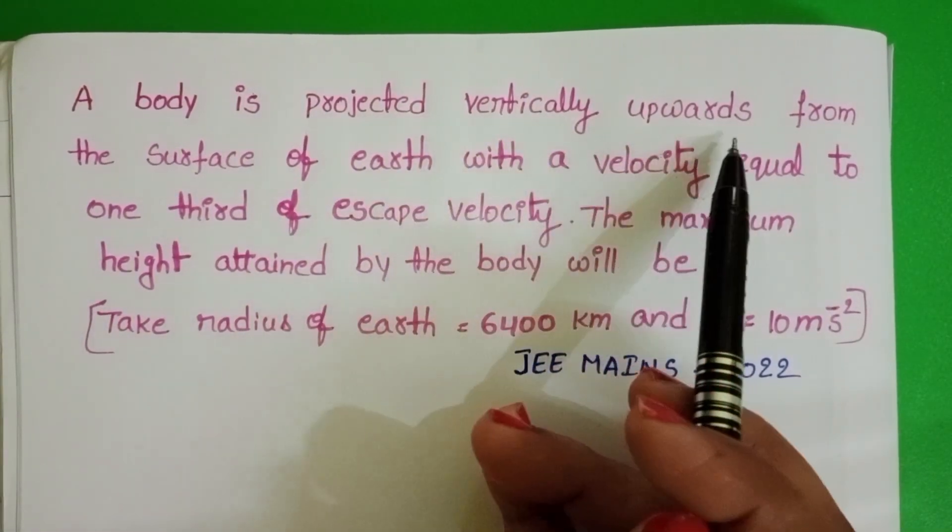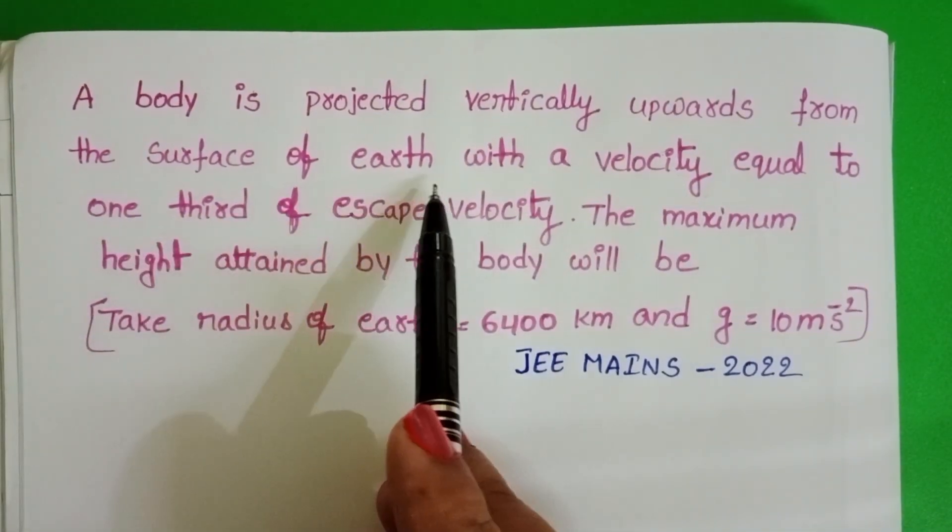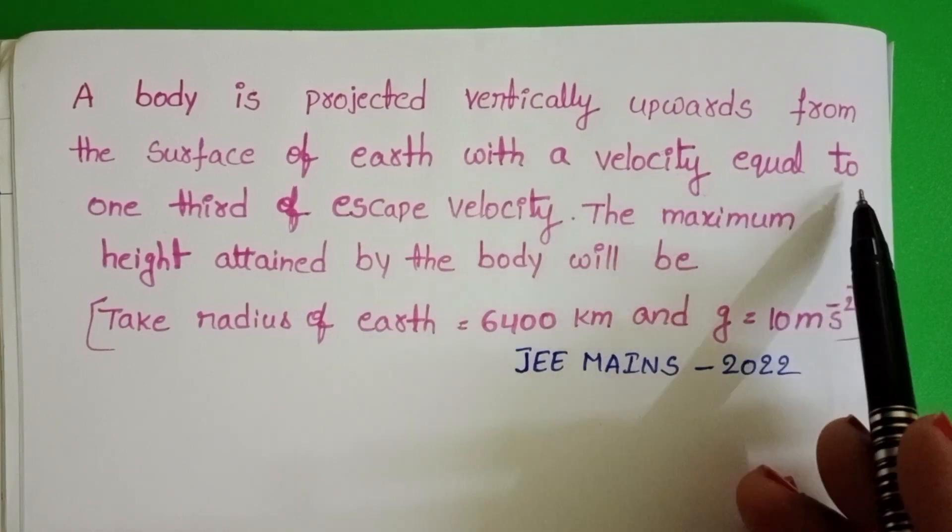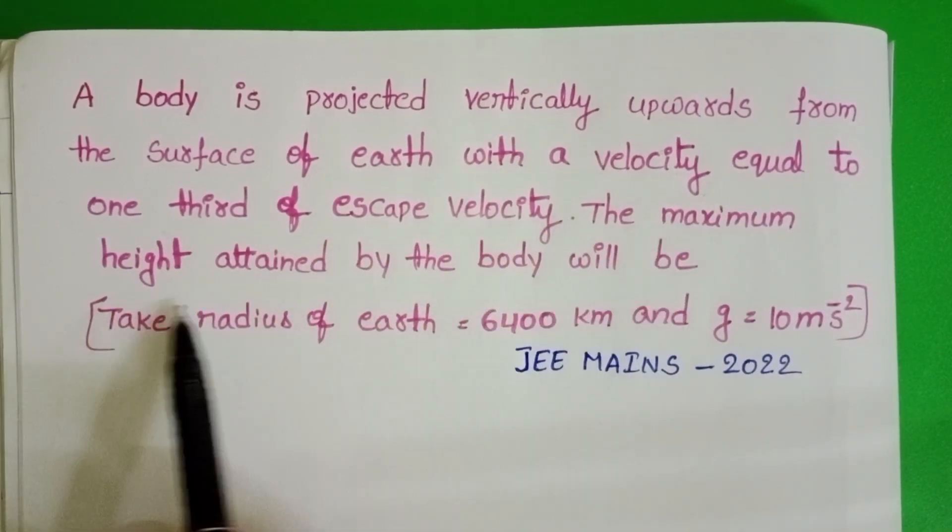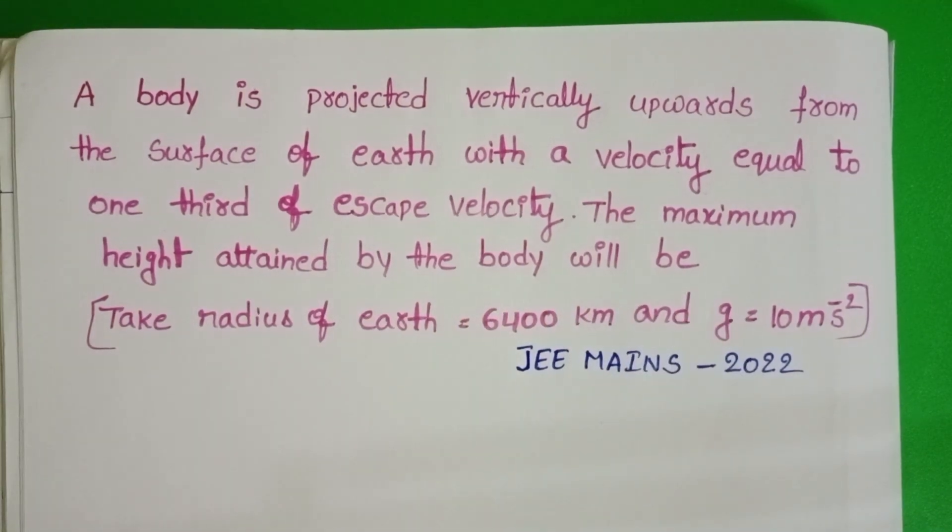A body is projected vertically upwards from the surface of the earth with a velocity equal to one third of escape velocity. The maximum height attained by the body will be.